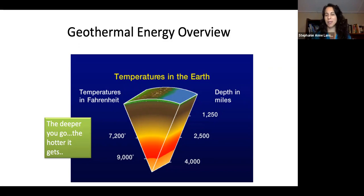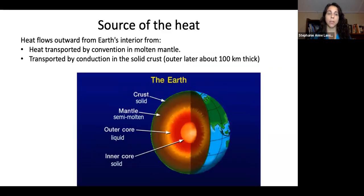If we look at depth in miles, as we go down to about 4,000 miles deep, we reach temperatures all the way to 9,000 degrees Fahrenheit. The heat flows outward from the earth's interior, transported by convection in the molten mantle, and then by conduction in the solid crust, the outer layer, which is about a thousand kilometers thick.